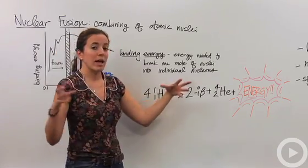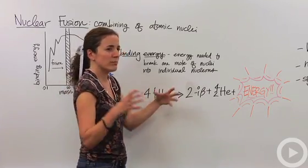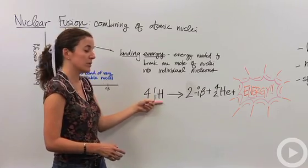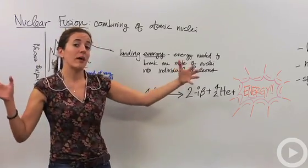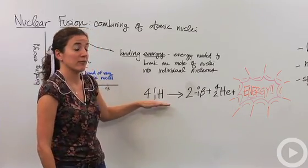So how does this go about happening? We have to actually bombard these hydrogen particles together at very high speeds in order for them to fuse together. Because don't forget, when these nuclei get close to each other, they're two positive things. They're going to repel. So we have to have tons of energy to overcome that repulsion to get them close enough together where they're going to bind and fuse.